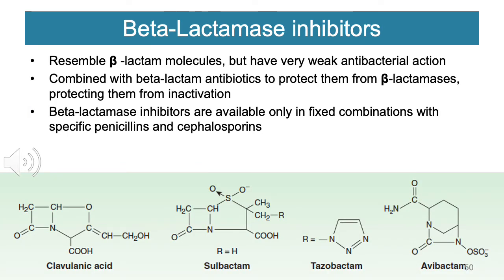Beta-lactamase is also a resistance mechanism for cephalosporins. Fortunately, beta-lactamase inhibitors have been developed. These inhibitors resemble beta-lactam molecules but have very weak antibacterial action. Combined with beta-lactam antibiotics, they protect those antibiotics from beta-lactamase, preventing inactivation. Beta-lactamase inhibitors are available only in fixed combinations with specific penicillins and cephalosporins. The most famous is co-amoxiclav — amoxicillin plus clavulanic acid (clavulanate). Other beta-lactamase inhibitors include sulbactam, tazobactam, and avibactam.